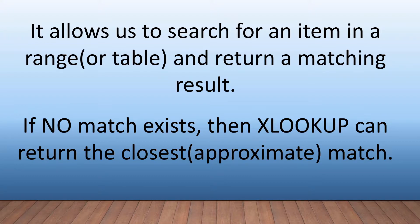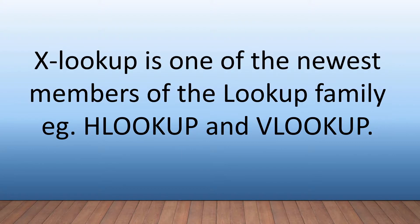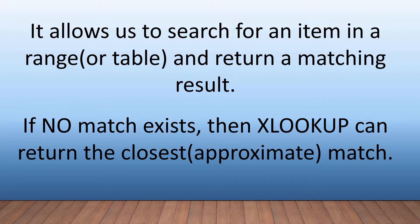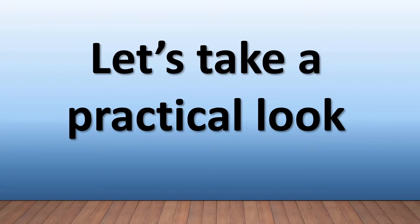XLOOKUP allows us to search for an item in a range or table and return a matching result. However, here is the big difference: if no match exists, XLOOKUP can actually return the closest approximate match. With HLOOKUP and VLOOKUP, if there's no match it would display an error or blank, whereas XLOOKUP can do both of those and also return the closest approximate match. Let's take a practical look.